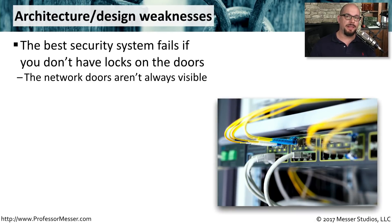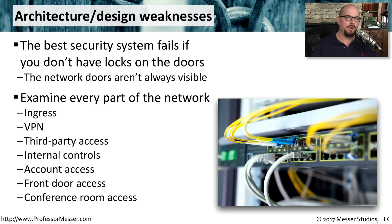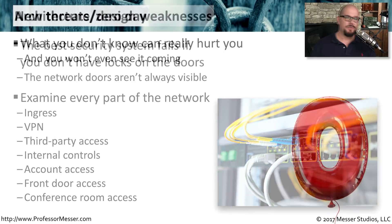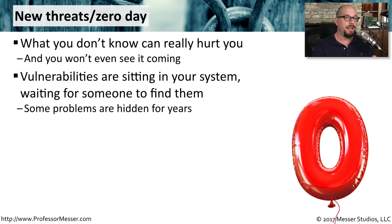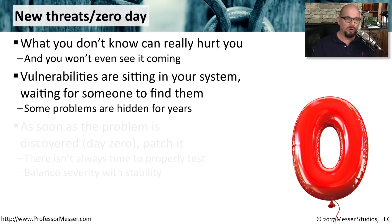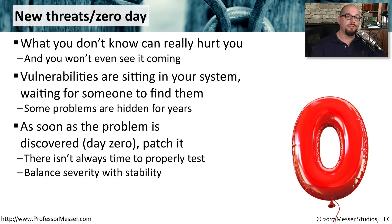If you didn't put locks on the front door of your building, that would be a significant security weakness. We have the same problem with our operating systems and our applications — we have to make sure we have the proper locks so the bad guys don't simply walk in. You have to examine every part of the network: where your internet connection comes in, VPN connectivity, third parties allowed access, and even the front door and conference rooms where there are network connections that could be used for malicious purposes. Security professionals are always worried about when the next zero-day attack is going to happen. There are some vulnerabilities that have been sitting in versions of software for years, and then suddenly someone finds them and begins exploiting them. It's when we don't patch a system, or don't patch it fast enough, that we really get burned by a zero-day vulnerability.